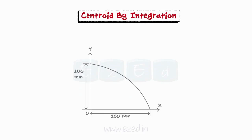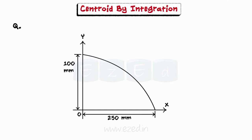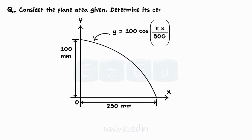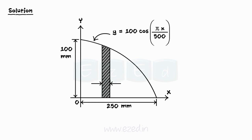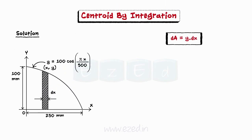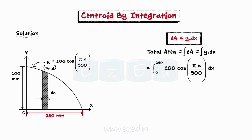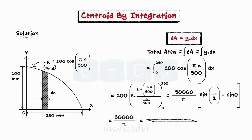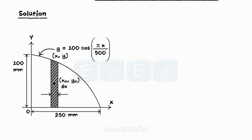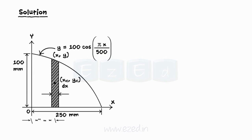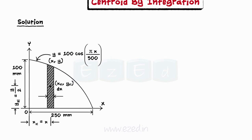The following problem helps us understand the method to find centroid of an area by using integration. Consider the plane area given and determine its centroid. We take an elemental vertical strip of width dx, and let (x, y) be a point on the curve just above the elemental strip. The height of the strip is y and its area dA equals y·dx. The total area under the curve can be found by integrating the area of the strip, with dx moving from 0 to 250 mm. Thus, the total area is found to be 15915.5 mm². The coordinates of the centroid of the element are x_el = x and y_el = y/2.